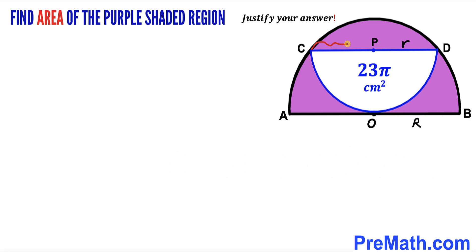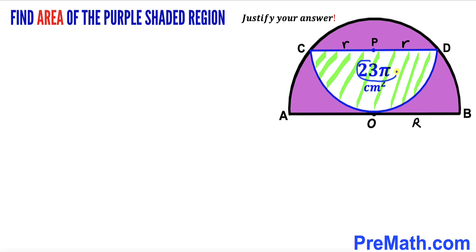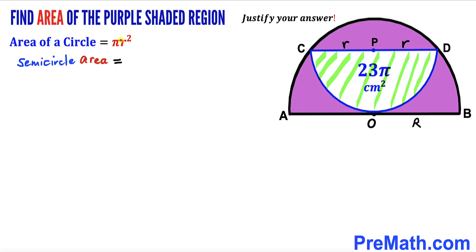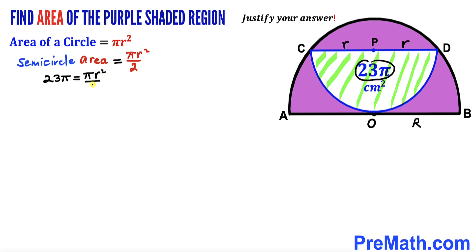Segment CP is also going to be lowercase r. Now let's focus on the smaller semicircle whose area is 23π cm². Recalling the area of a circle formula: Area = πr², and since we are dealing with a semicircle, the area is πr²/2. Since the area equals 23π, we write 23π = πr²/2, and we cancel π on both sides.